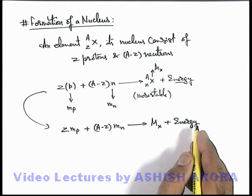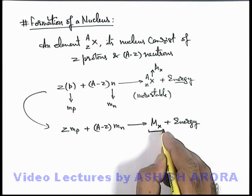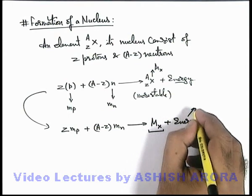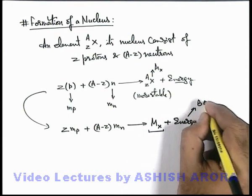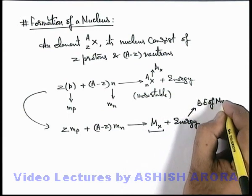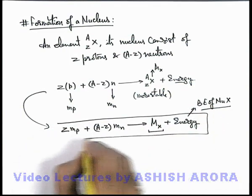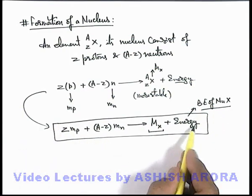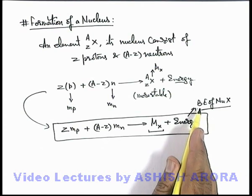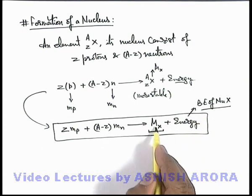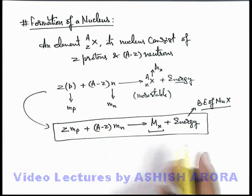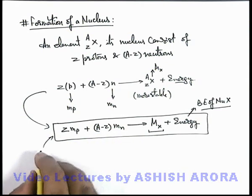This release of energy is the cause of more stability of nucleus. Or we can write this energy as binding energy of nucleus X. This is the energy which we are calling as binding energy, which is the energy when externally supplied to the nucleus, it will split into its constituents. And this reaction we can write.